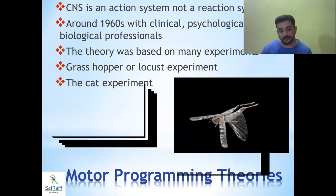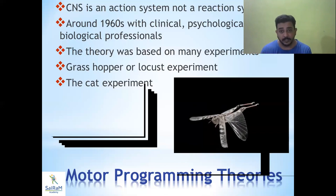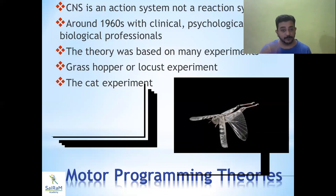This theory explained that there are sets of movements that happen sequentially and cyclically in the same pattern, called central pattern generators. The same concept was seen in a cat. When a cat's sensory system was cut off from its brain, it was still able to walk.